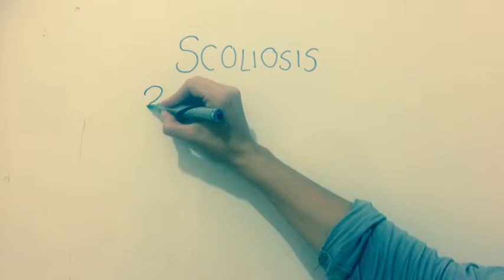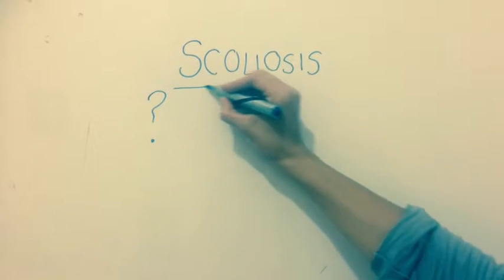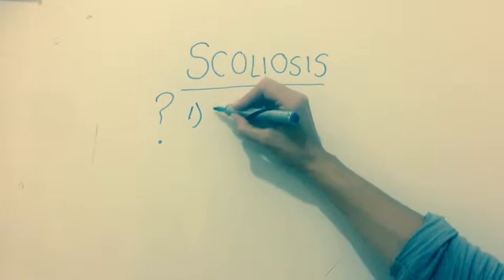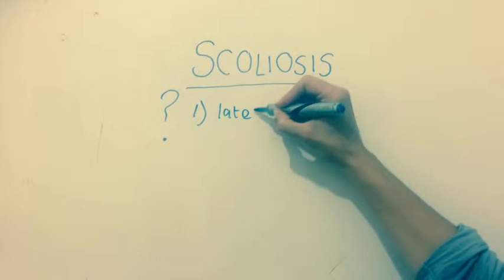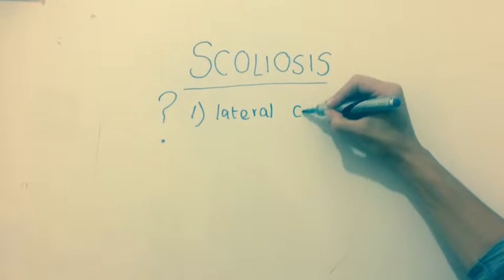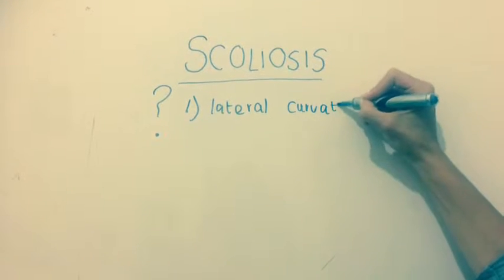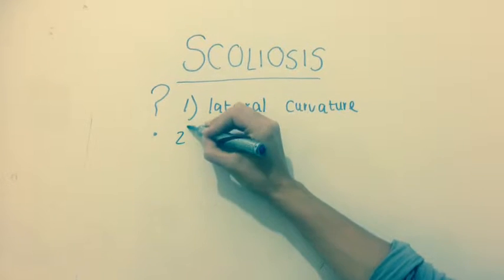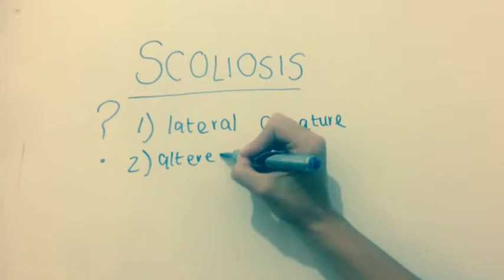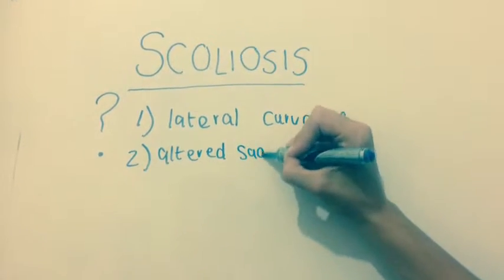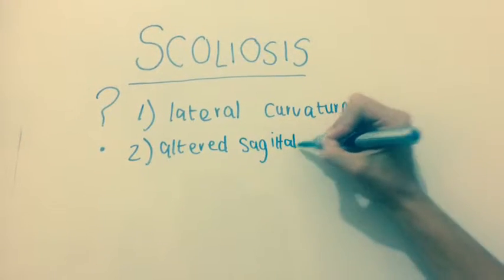What is scoliosis? It is a three-dimensional deformity characterized by lateral curvature of the spine, altered sagittal profile, as well as vertebral rotation.